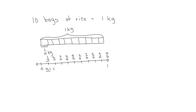We can write the next ones as two tenths, three tenths, four tenths, five tenths, six tenths, seven tenths, eight tenths, nine tenths. And ten tenths would be one — we write it as a decimal point and zero to show there's no fractional part, which is equivalent to just writing one.